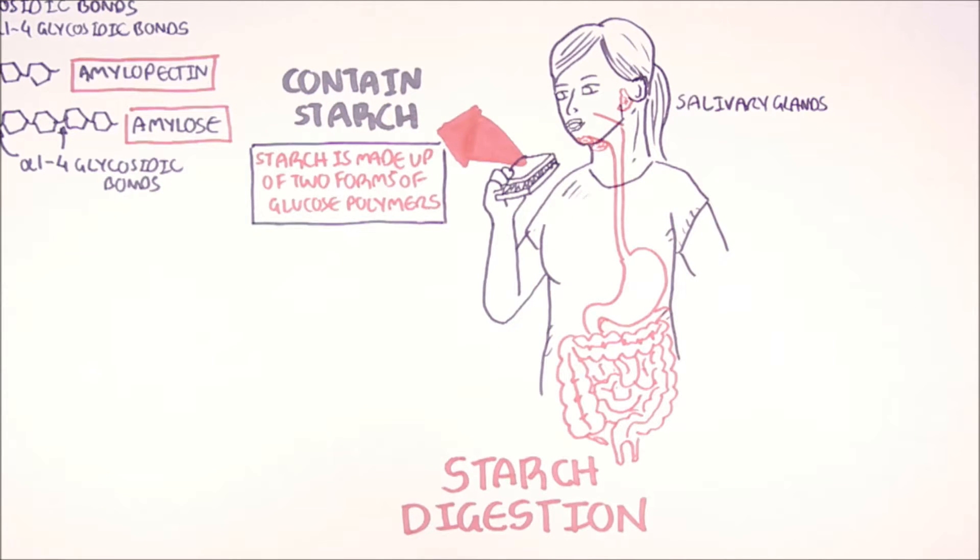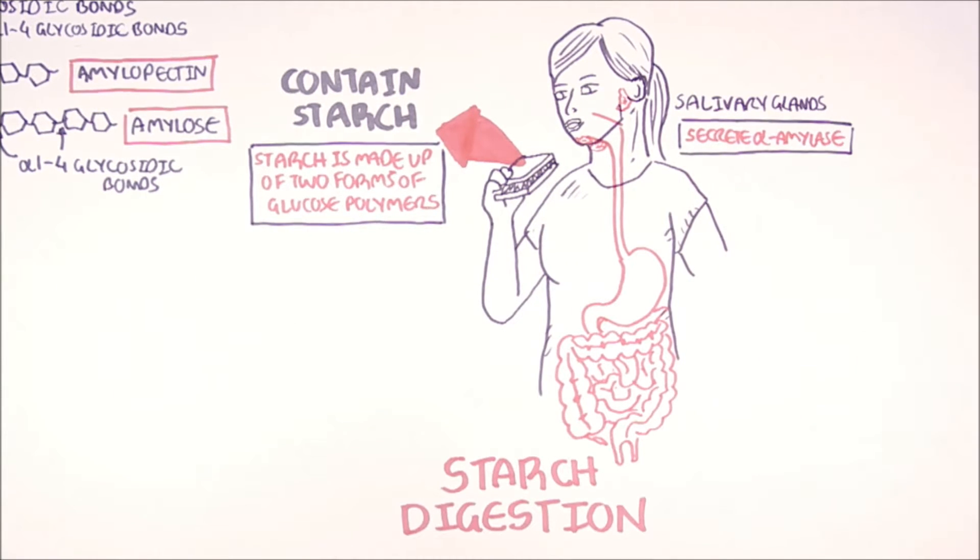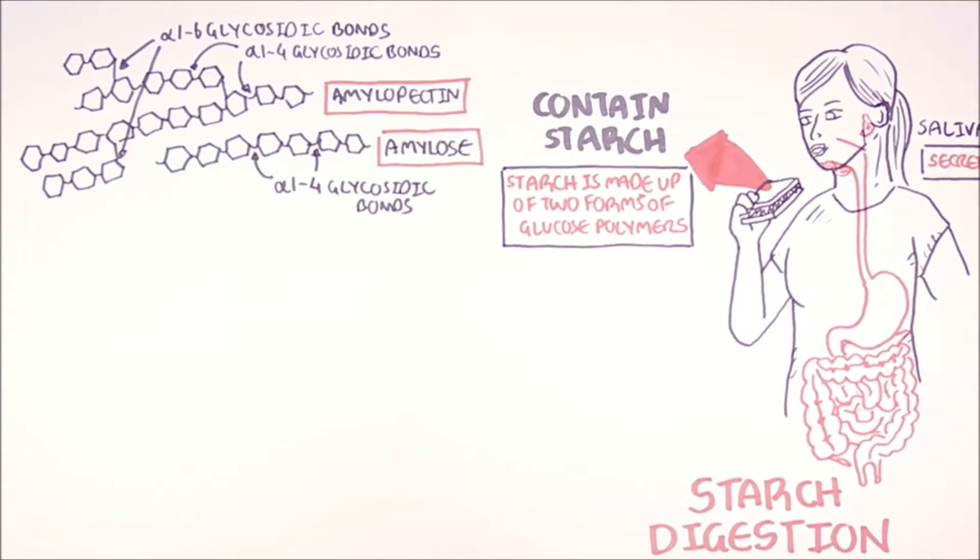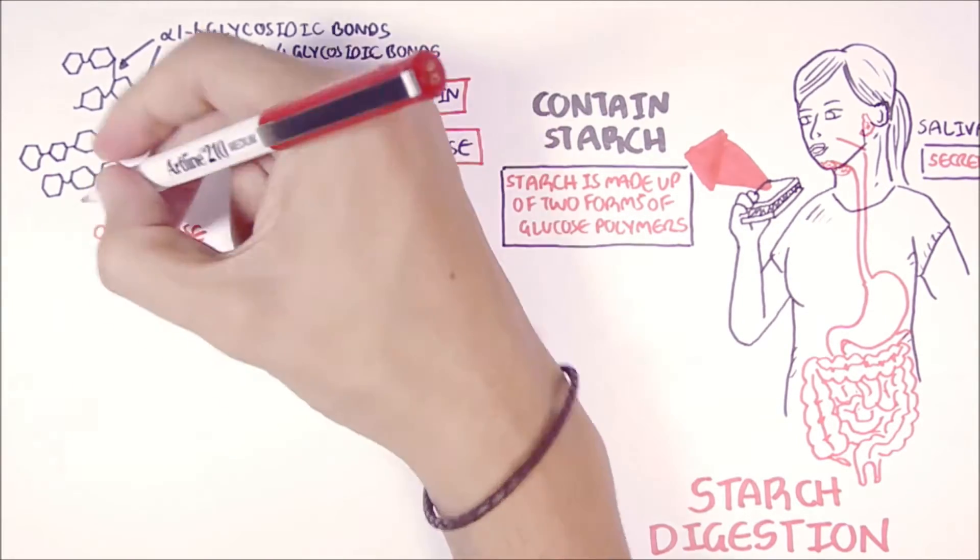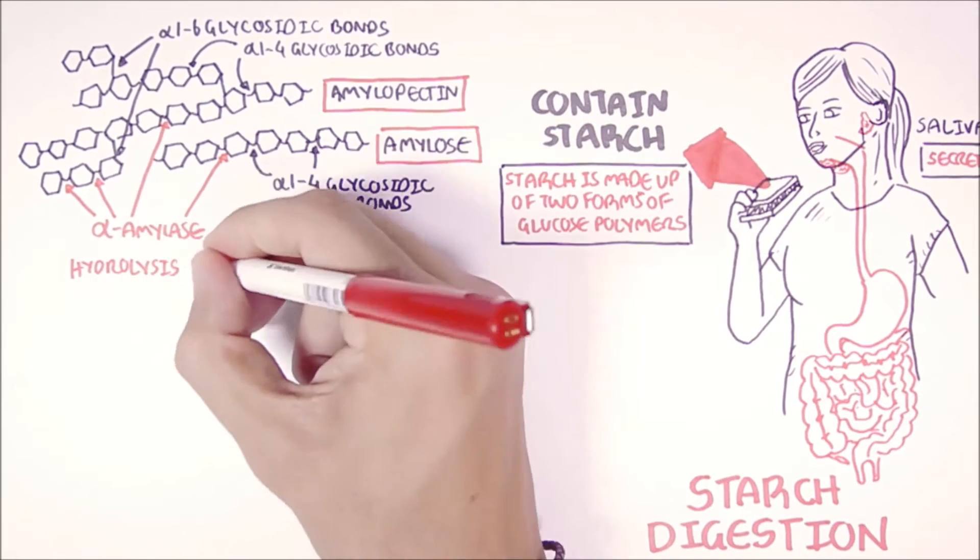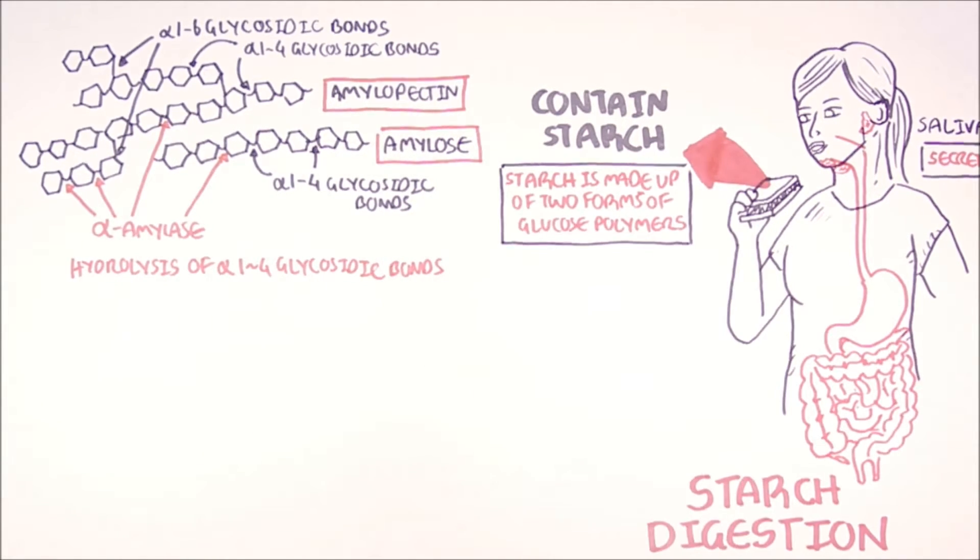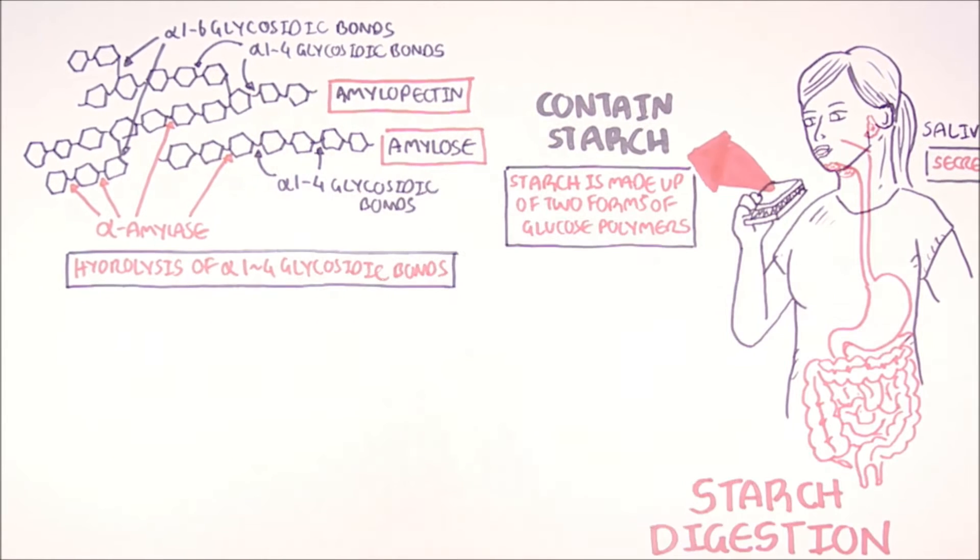The salivary glands secrete saliva, but also the enzyme within it called salivary alpha-amylase. What alpha-amylase essentially does is that it will break these bonds here, the alpha-1,4 glycosidic bonds. So alpha-amylase hydrolyzes alpha-1,4 glycosidic bonds.